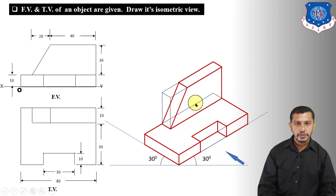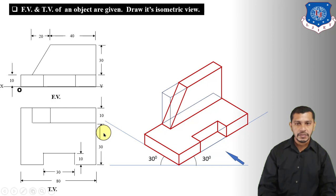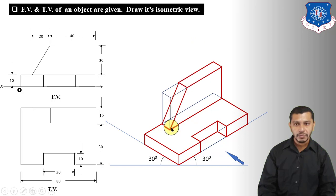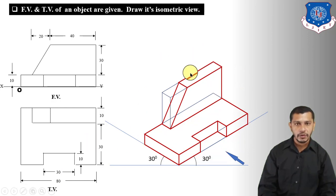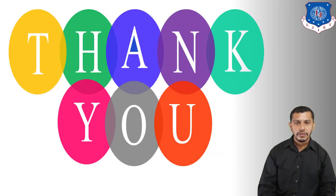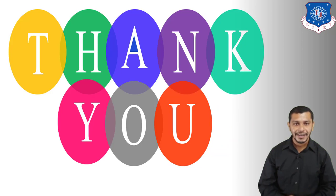This is the final isometric view of the object. Mark the actual dimensions on the view since we have drawn the isometric view. If you want to draw the isometric projections of this object, convert all dimensions into isometric dimensions using the isometric scale. That's it for today — thank you for watching, see you in the next session. Take care.